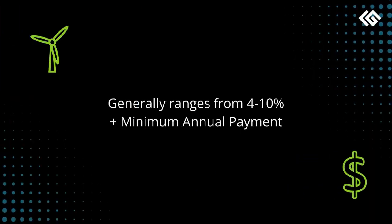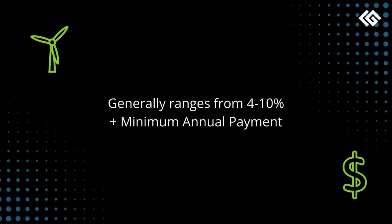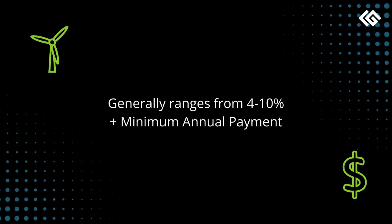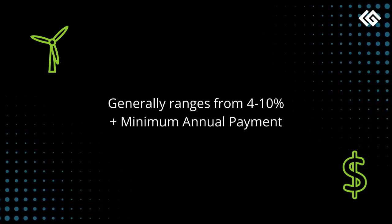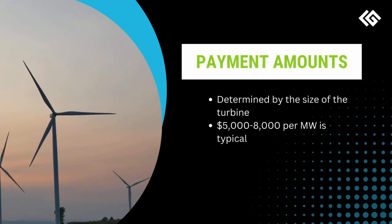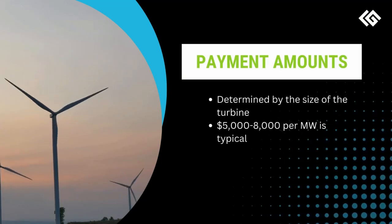The royalty percentage is also negotiable, but generally ranges from 4 to 10%. Wind leases that pay royalties typically have a guaranteed annual payment, regardless of the performance of the turbines, which is also referred to as the minimum payment. The size of the wind turbine generally determines the payment amounts.